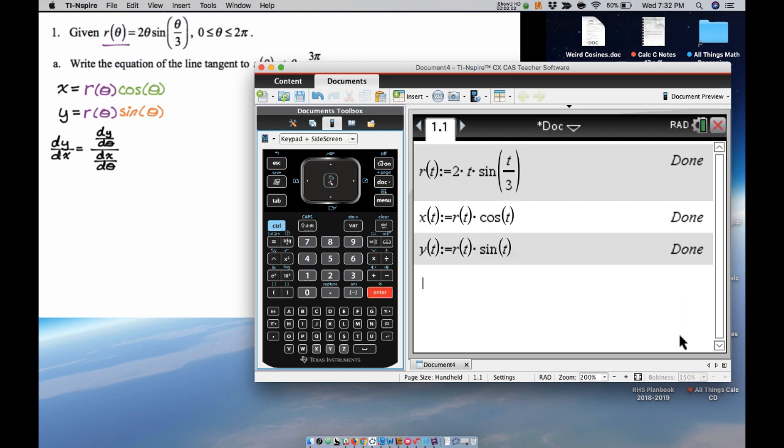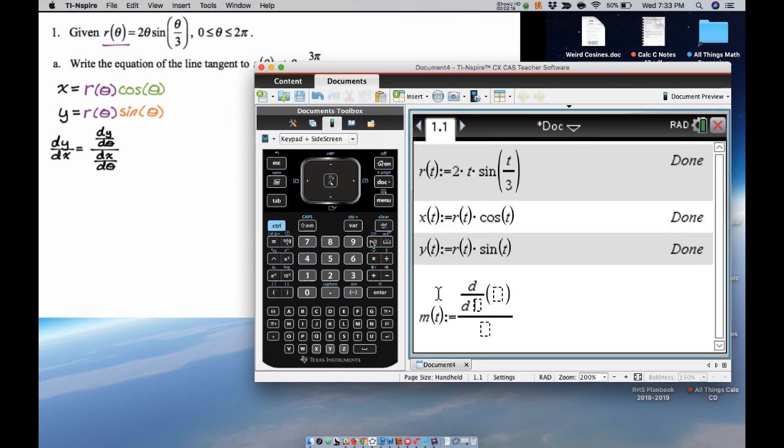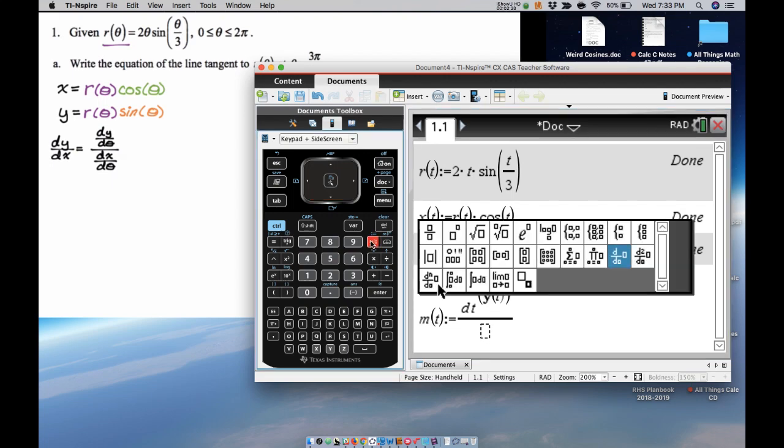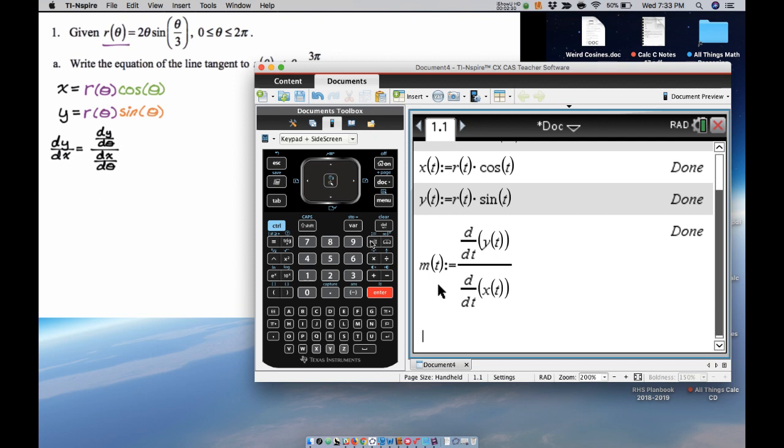And then I'm going to store dy/dx. So it's the slope of the line, so I'm going to call it m. So m of t, because it's a function of theta, is going to be the derivative with respect to t of y(t) over the derivative with respect to t of x(t). So that's going to give me dy/dt over dx/dt, which is dy/dx. Okay, so all of those stay done.